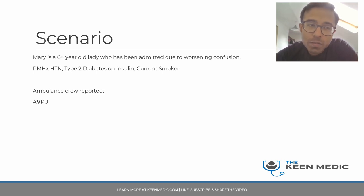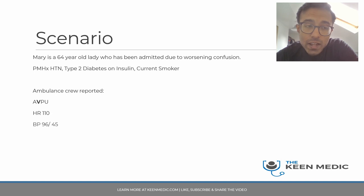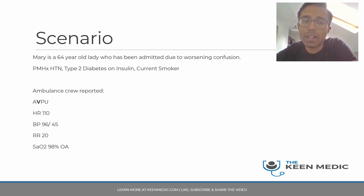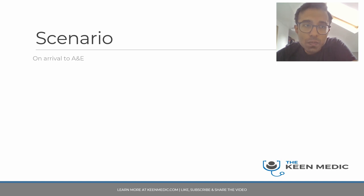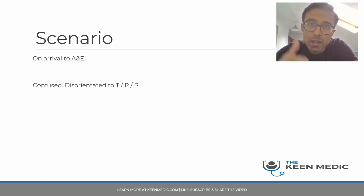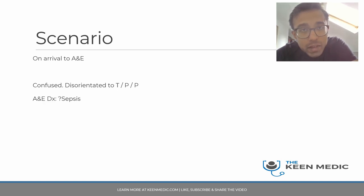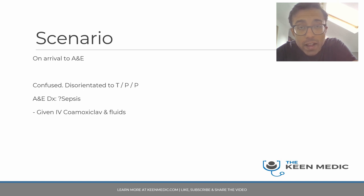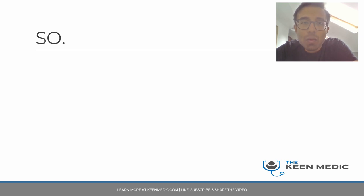Her heart rate was 110, blood pressure 96 over 45 with the ambulance crew, respiratory rate around 20 — slightly raised — and sats 98% on air, which is fine. Temperature was normal at 37.1 degrees. On arrival to A&E she was confused and disorientated to time, place, and person. She was treated as possible sepsis, given IV co-amoxiclav and fluids, and referred to the medical registrar.